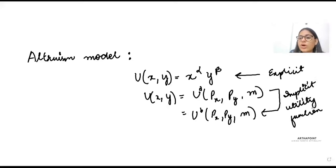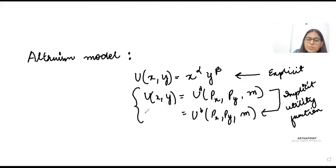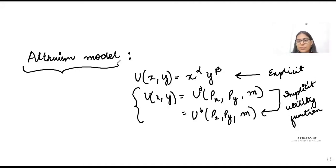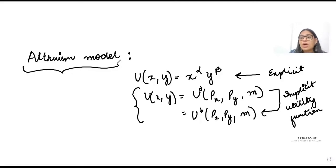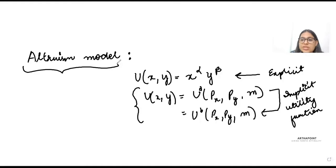What I'll do today is continue with the implicit utility function, introduce a new model around it, and then club it with intertemporal choices. You will see how this is very much asked in DSC and ISI exams.